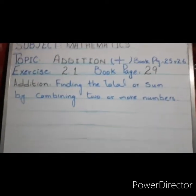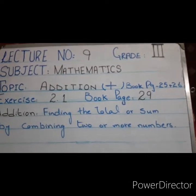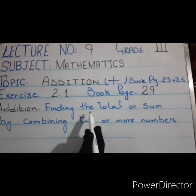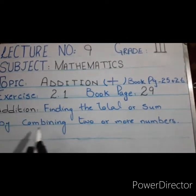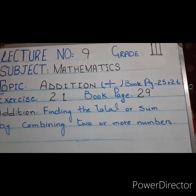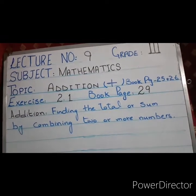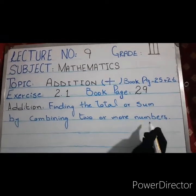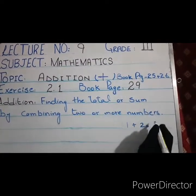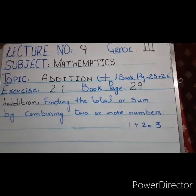Vertical means up to down and horizontal means left to right method. Okay students, what is addition? Finding the total or sum by combining two or more numbers. Like one plus two — find the total. The total is three. And three is also called sum.